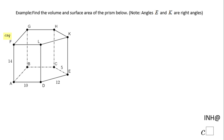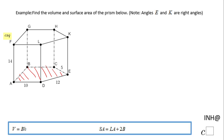Welcome back, and I need help at C Square. In this example we need to find the volume and the surface area of the prism below. We notice the prism has a base polygon of five sides — it's a pentagonal prism. The base is a pentagon, and the volume will be the area of the base times the height.